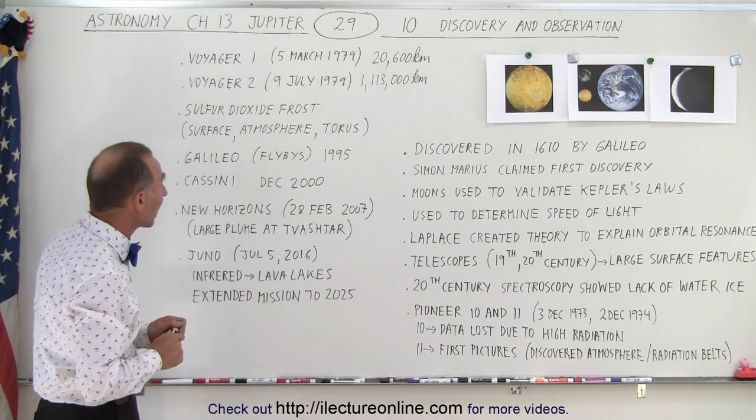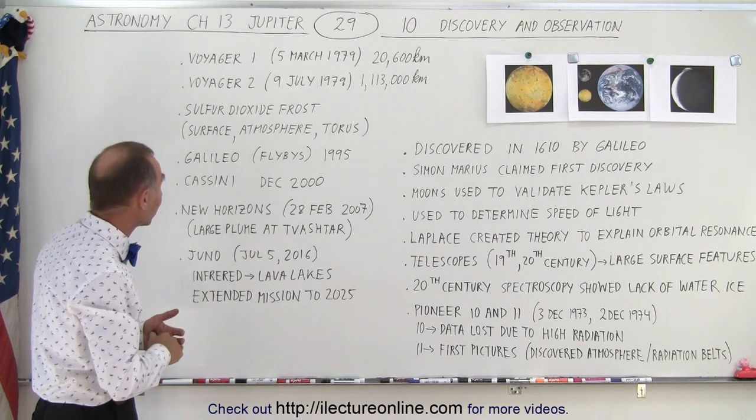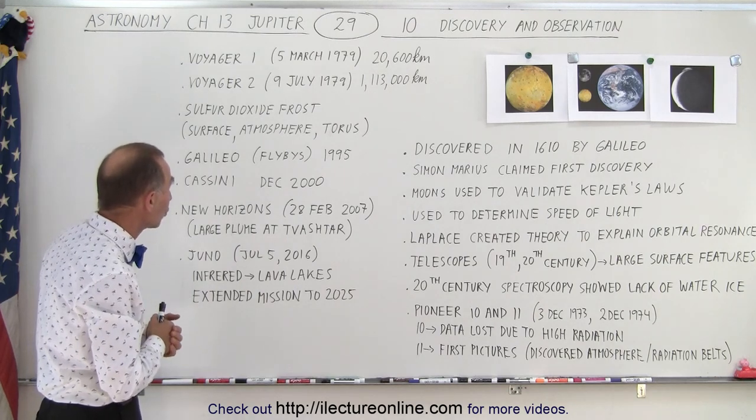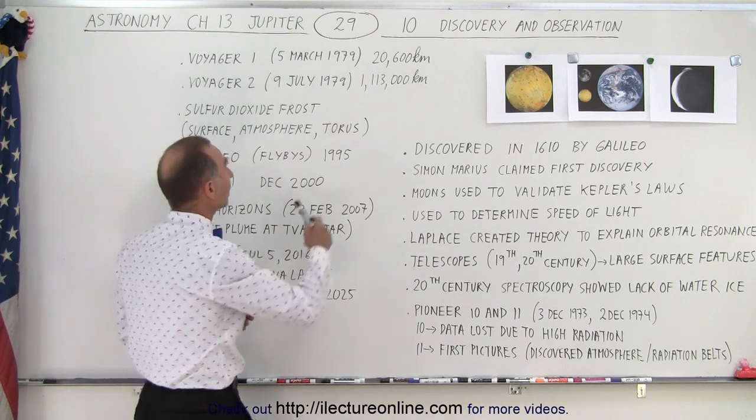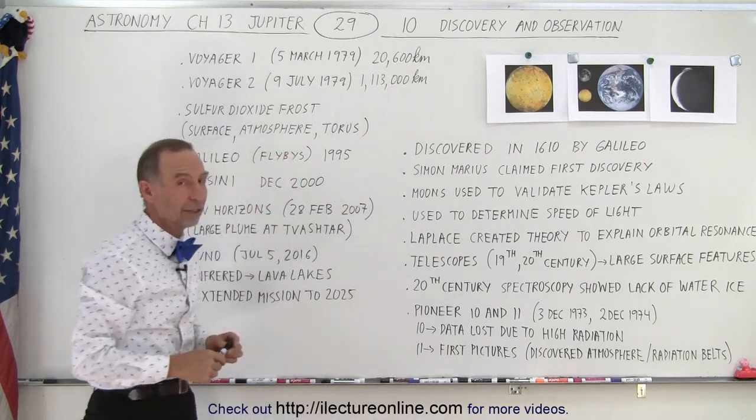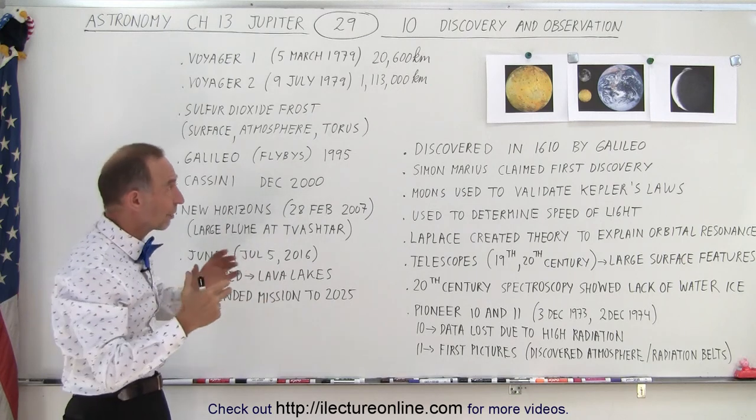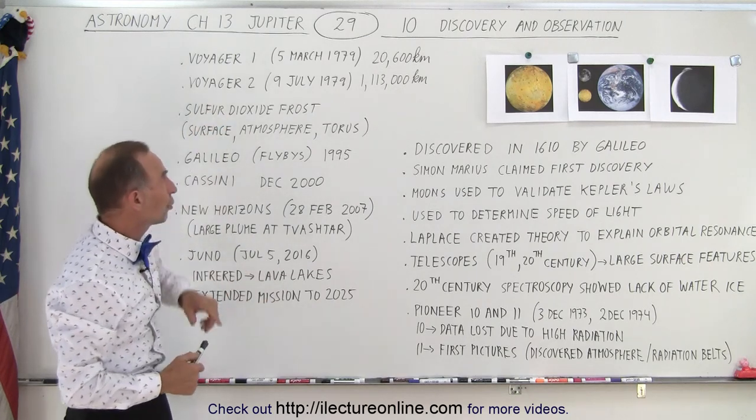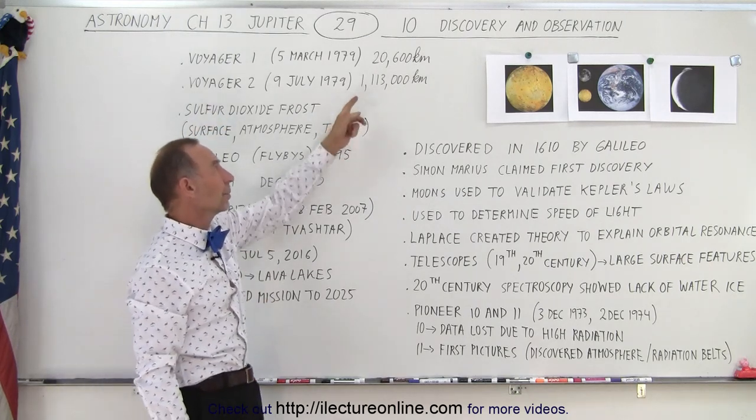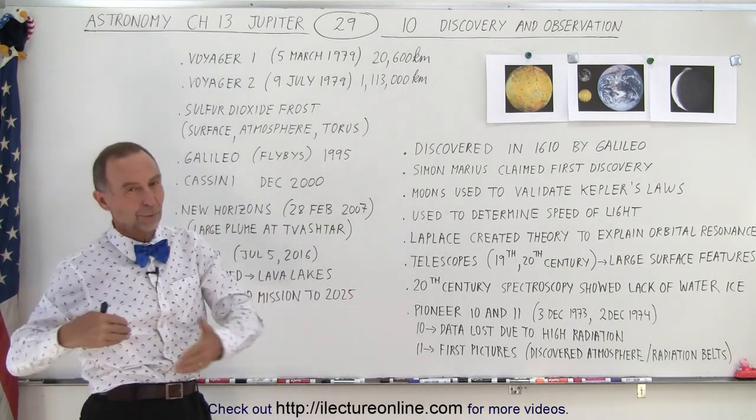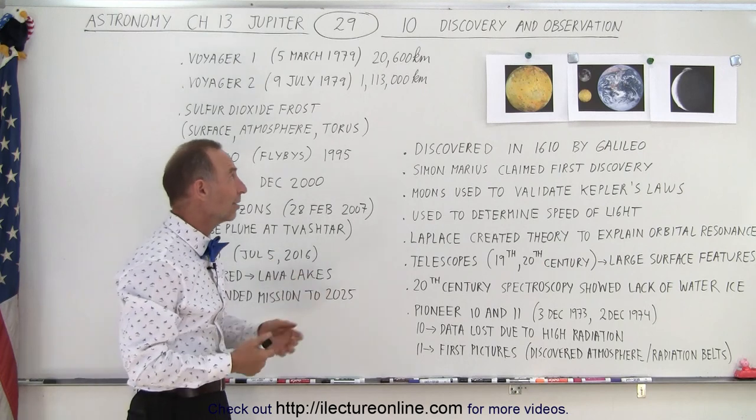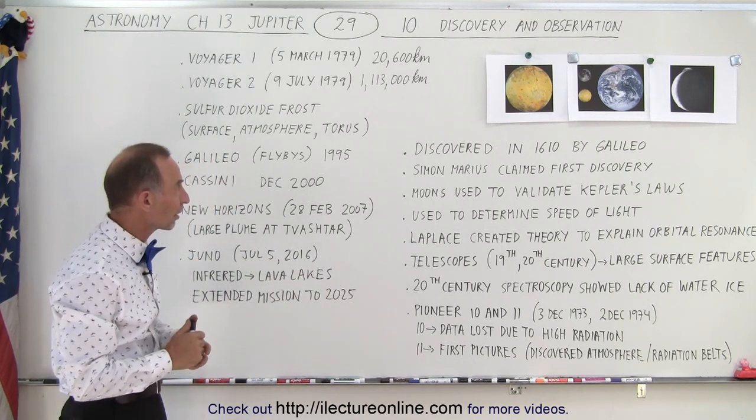Then Voyager 1 came in March of 1979 and quickly followed by Voyager 2 in July of 1979. Notice that Voyager 1 came within about 20,600 kilometers of the surface, so it was able to take some very nice pictures. Voyager 2 didn't get that close, a little bit over a million kilometers, but of course a million kilometers compared to the distance between Earth and Jupiter, that is quite close, and so they were also able to take some nice pictures.